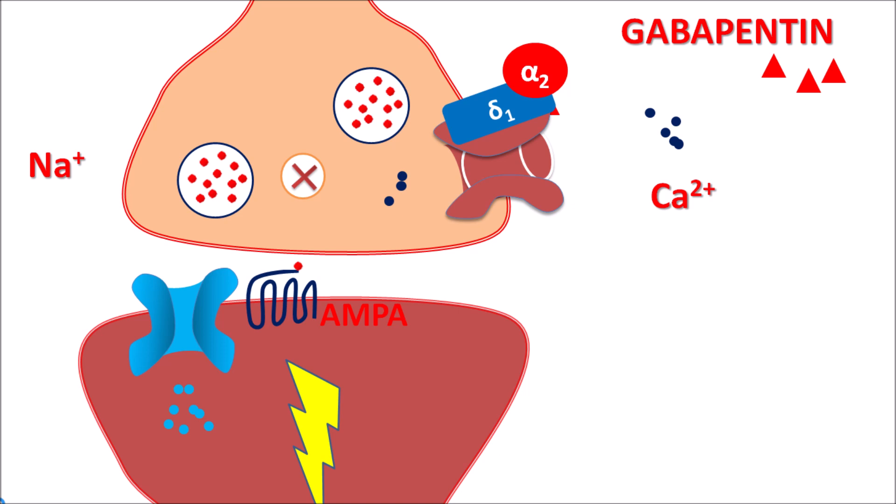Gabapentin reduces neuronal activity by inhibiting neurotransmitter release. It is not directly acting on voltage-gated calcium channels but binds to the alpha-2-delta-1 site, blocking the expression of calcium channel pores within the presynaptic neurons.